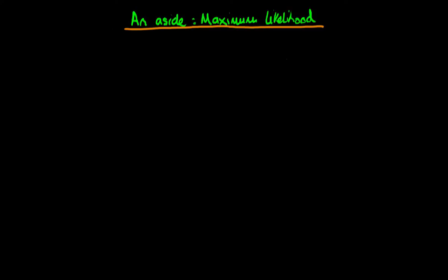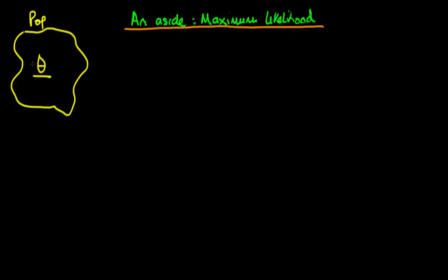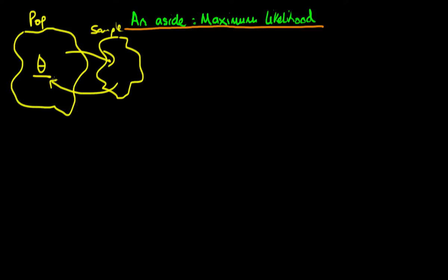In this video I want to take a step away from Bayesian inference to talk about a classical topic known as maximum likelihood estimation. The idea is that we have some population of interest, and within that population we suppose there is some true value of a parameter or range of parameters, which I've called theta. We have a sample from that population and we're trying to use that sample of data to make inferences about the actual values of theta.